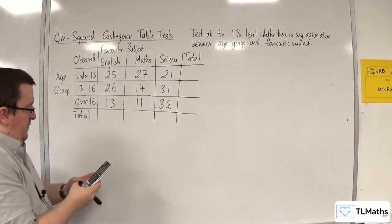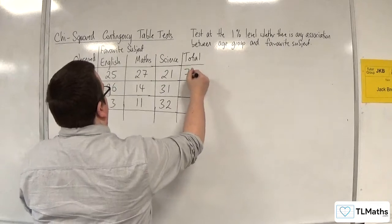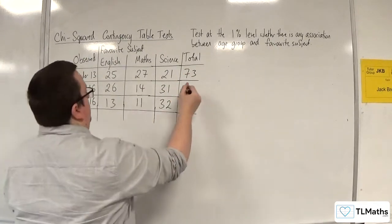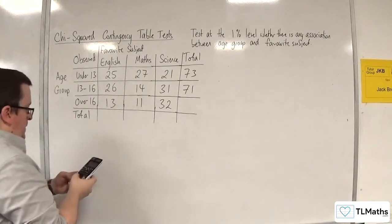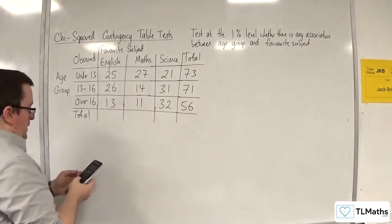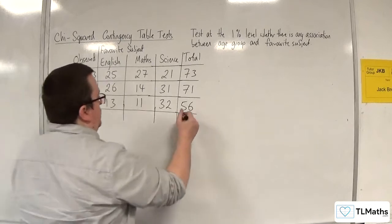So 25 plus 27 plus 21, that's 73. 26 plus 14 plus 31 is 71. 13 plus 11 plus 32 is 56. So 56 plus 71 plus 73 is 200.